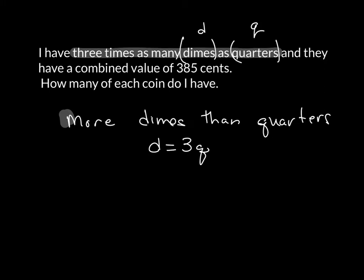And again, the way to think about this is that you have three times as many dimes, so you have more dimes. So the number of dimes is equal to three times the number of quarters.